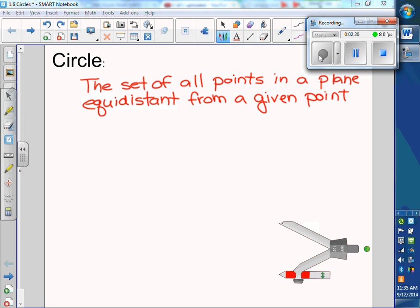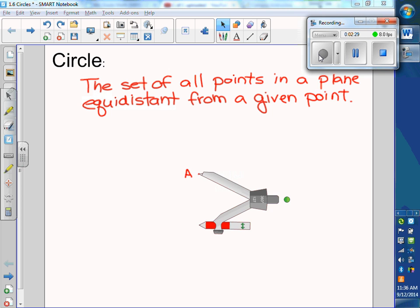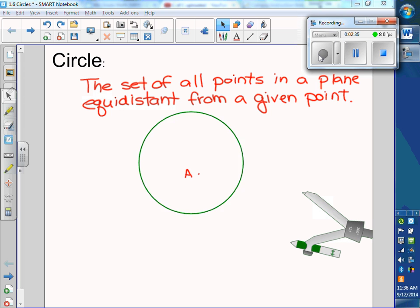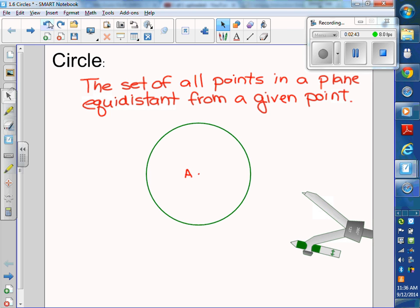So if you think about it, one big misconception: if this is my center point A, and I pick up my compass and I construct my circle, this is the circle, you guys. The center is not part of it.